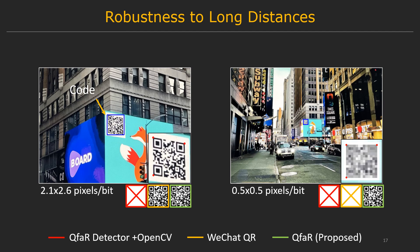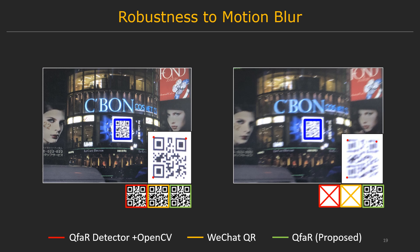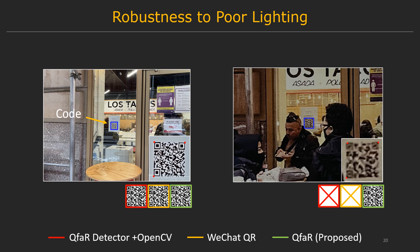Let me go through some qualitative comparisons on real data. In this example, the conventional method stops working when the resolution reaches about 2×2 pixels per bit, but QFaR continues to work until about 0.5×0.5 pixels per bit — a huge improvement. QFaR is also robust against challenging scenarios such as large viewing angles — the conventional scanner can only scan from the front, while QFaR works from very large angles. QFaR is also robust to motion blur caused by camera shake, especially in dark environments, and robust to noise and artifacts due to poor lighting.